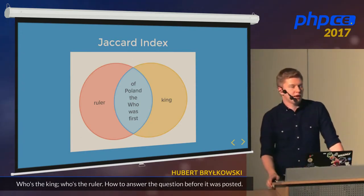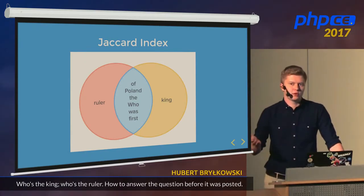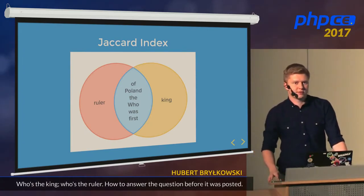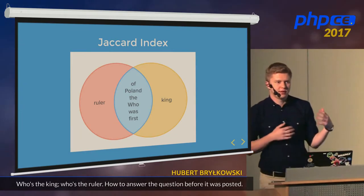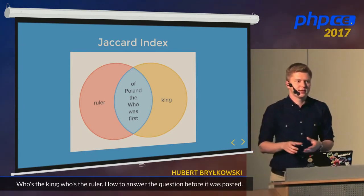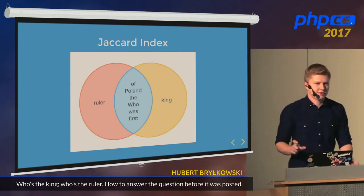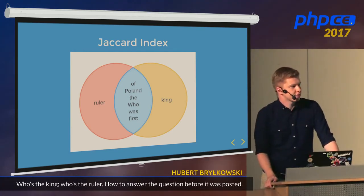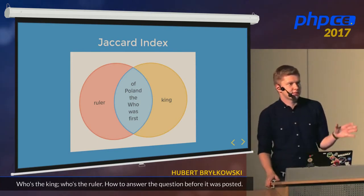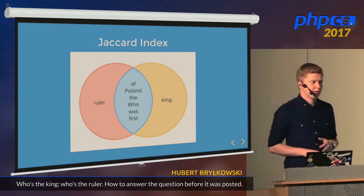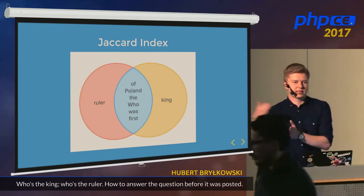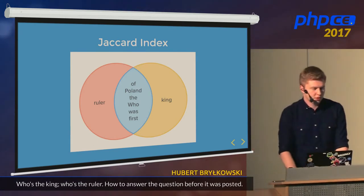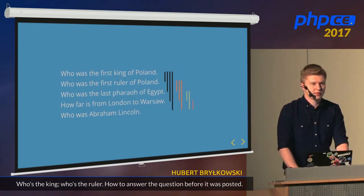We can say that above some threshold, we can consider two questions duplicates. But what's the threshold? The best way to find it is to take a list of duplicate pairs from your domain expert, iterate over them and measure the Jaccard index. Afterwards, scramble the list and calculate the Jaccard between unique ones. After experiments, let's say 0.5 is our threshold — everything with a Jaccard index higher than 0.5 is a duplicate, and below 0.5 is unique.